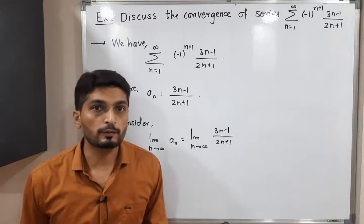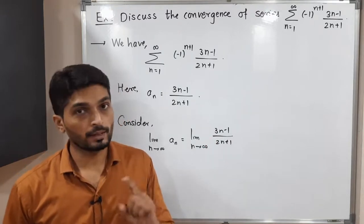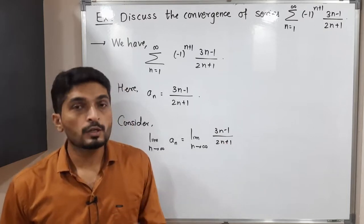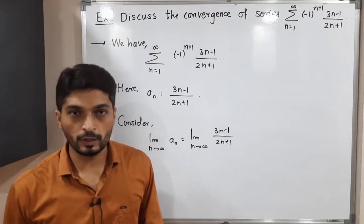So you know well how to find the value of this limit. What is the highest power of n at numerator? 1. What is highest power of n at denominator? 1. So simply, I will divide numerator and denominator by n. So let us do that.